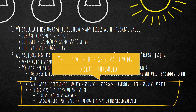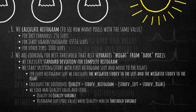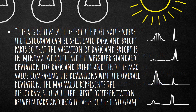That threshold variable is what you can use for splitting your objects. To put it in a nutshell: the algorithm detects the pixel value where the histogram can be split into dark and bright parts so that the variation of dark and bright is at minima. We calculate the weighted standard deviation for dark and bright and find the max value comparing those deviations with the overall deviation. The max value represents the histogram slot with the best differentiation between dark and bright parts.